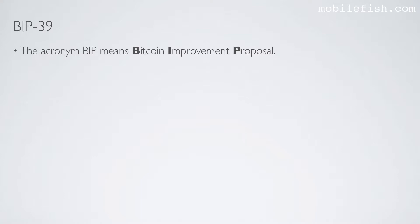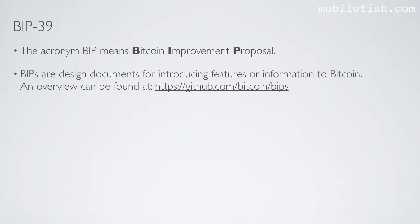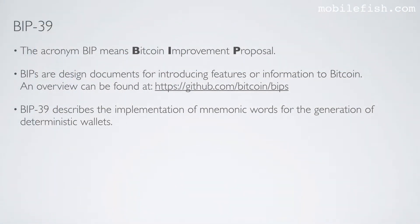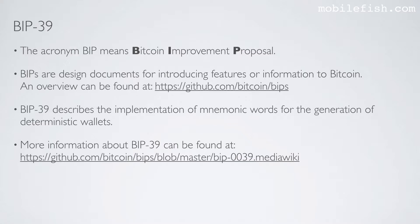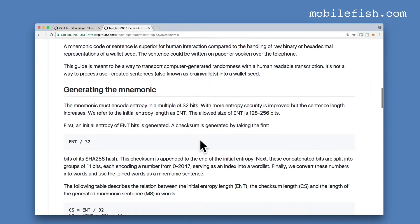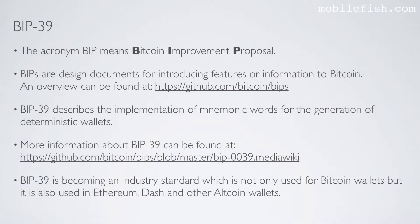The acronym BIP means Bitcoin Improvement Proposal. Bitcoin Improvement Proposals are designed documents for introducing features or information to Bitcoin. Bitcoin Improvement Proposal 39 describes the implementation of mnemonic words for the generation of deterministic wallets. BIP39 is becoming an industry standard which is not only used for Bitcoin wallets, but is also used in Ethereum, Dash, and other altcoin wallets.